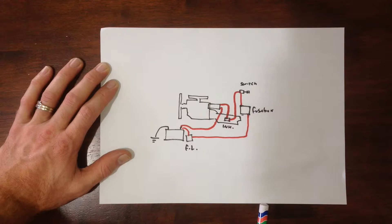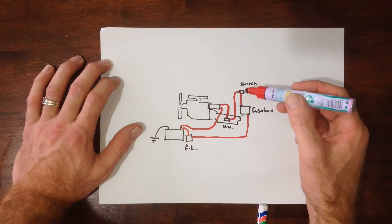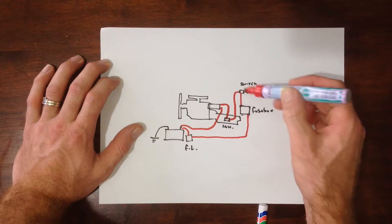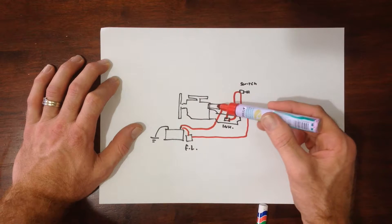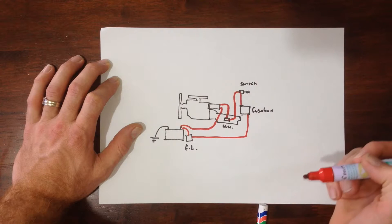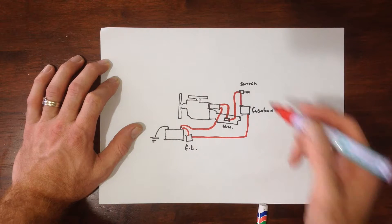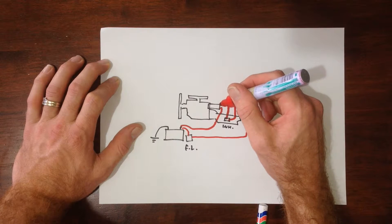Now, with a relay system, this cable still exists. Okay. But instead of pulling in the whole solenoid, we only make it pull in a relay. So we disconnect it here.